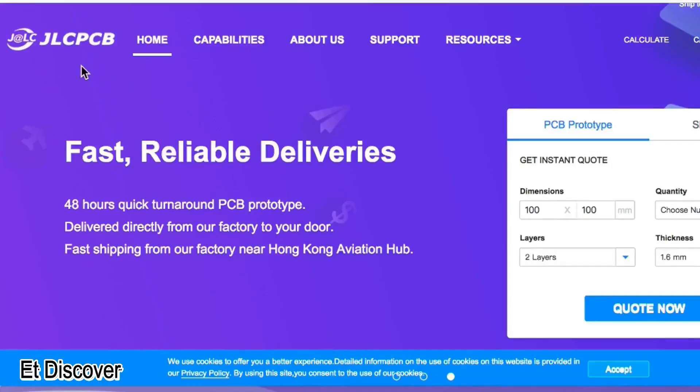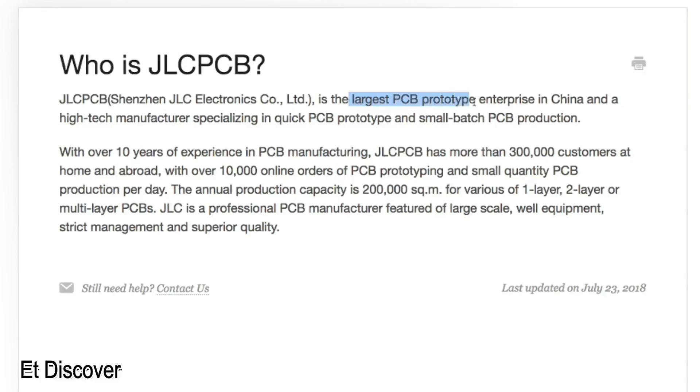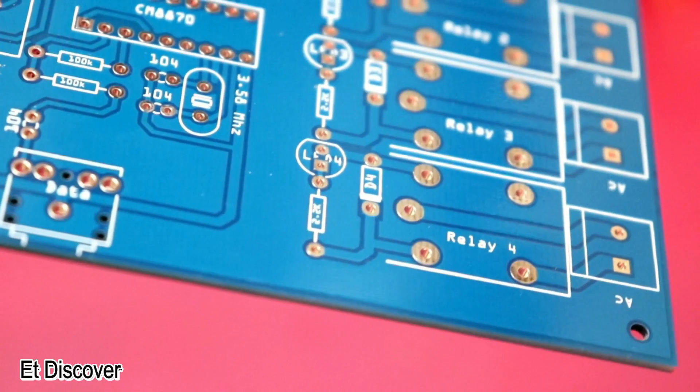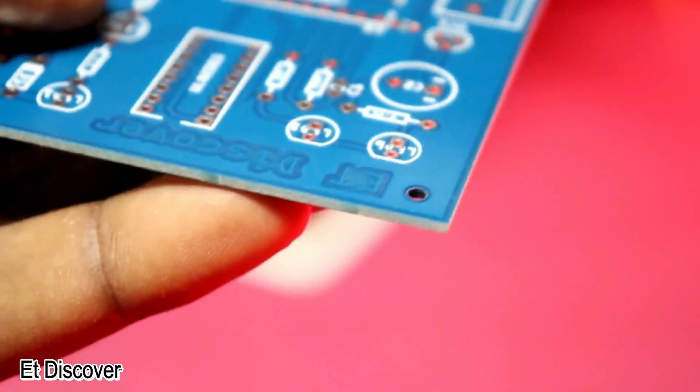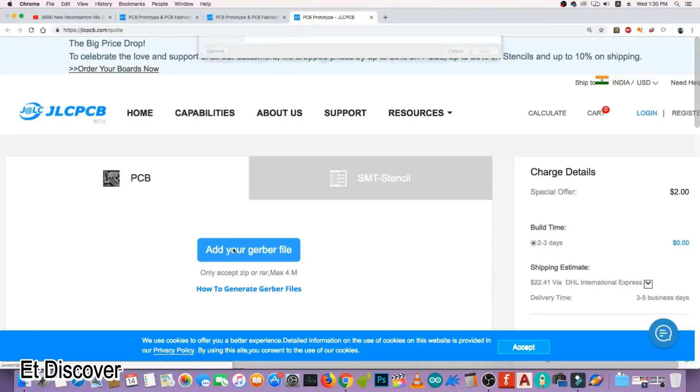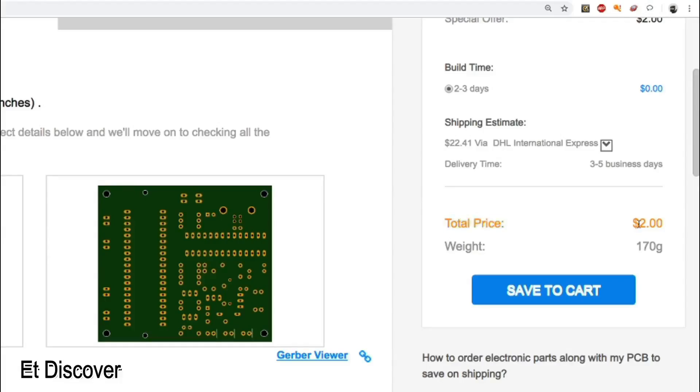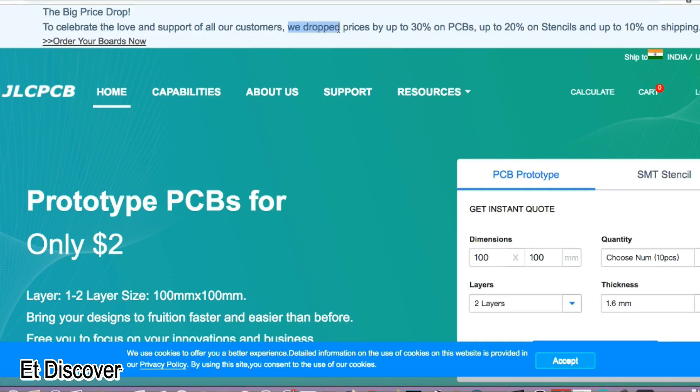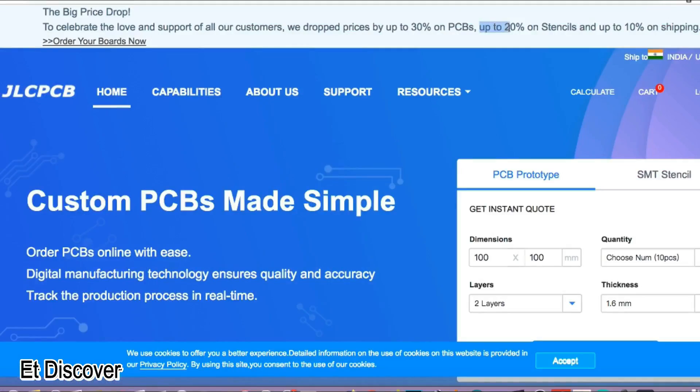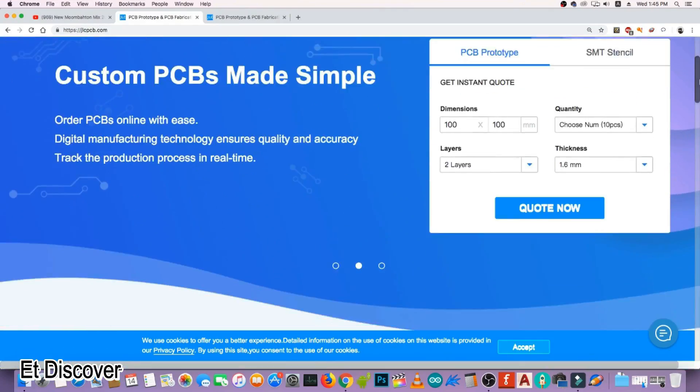This video is sponsored by JLCPCB. This is the largest manufacturer company in China. They provide very high quality PCBs at very low prices. Just upload your Gerber file to get 10 amazing PCBs for $2. They've also dropped their prices. You can get up to 30% off PCBs and 20% off stencils. Make sure to visit their website.